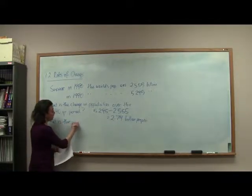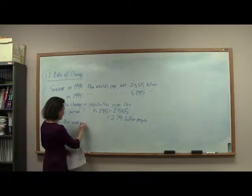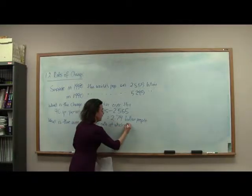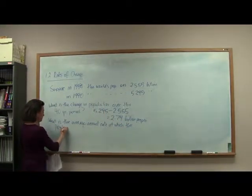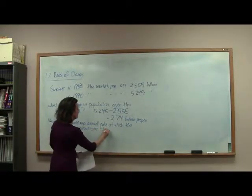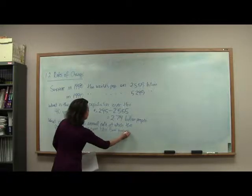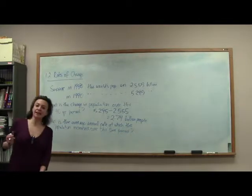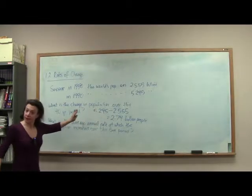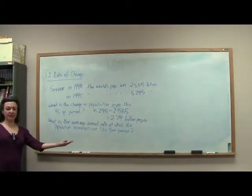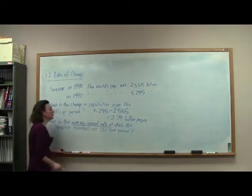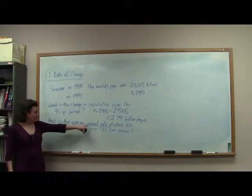What is the average annual rate at which the population increased over this time period? I'm actually asking a different question. There I wanted to know the change in population — we were just taking billions of people minus billions of people. Here, I'm asking what is the average annual rate at which the population changed. Annual meaning yearly rate.